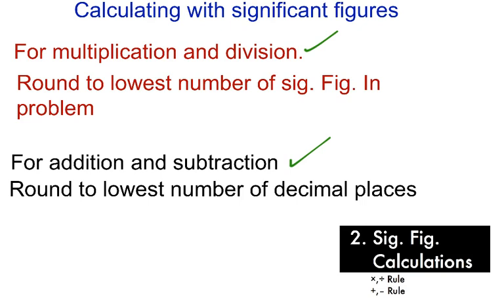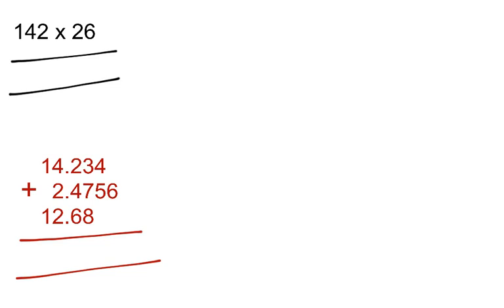And when you're doing a multiplication or a division, you simply round to the lowest number of significant figures in the problem. And when we do an addition or subtraction, we will round to something also that's lowest, but in the case of addition and subtraction, we're rounding to the lowest number of decimal places. So we have some examples on the next page.